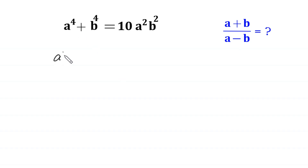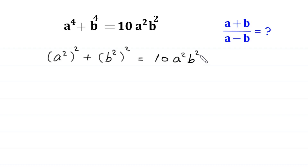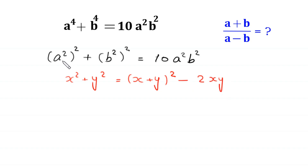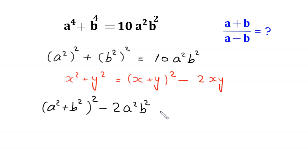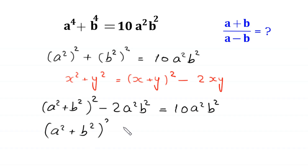Let's start. a to the power 4 can be written as (a squared) whole squared, plus b to the power 4 written as (b squared) whole squared, equal to 10 times a squared b squared. By using the algebraic identity x squared plus y squared equals (x plus y) whole squared minus 2xy, the left hand side can be written as (a squared plus b squared) whole squared minus 2 times a squared b squared equal to 10 times a squared b squared.